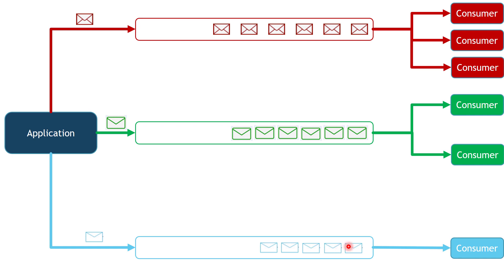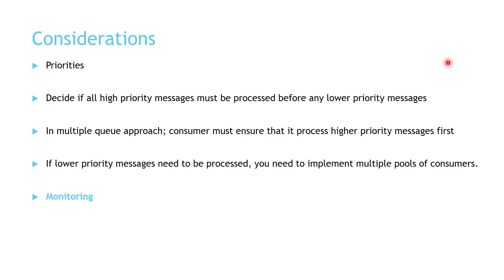As shown in this diagram, we have a dedicated consumer processing low priority messages at a slower pace compared to higher priority messages. You also need to set up monitoring for your queues to track how many messages are in each queue and how quickly consumers are processing them. Additionally, be aware that extra costs may be incurred from continuously polling queues for new messages, and you should allow your solution to dynamically scale up and down based on workload.